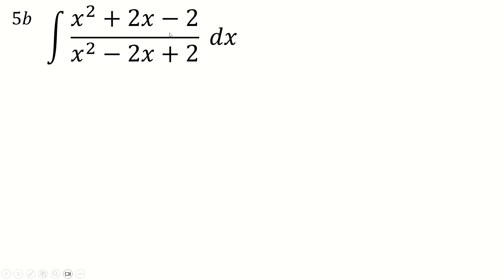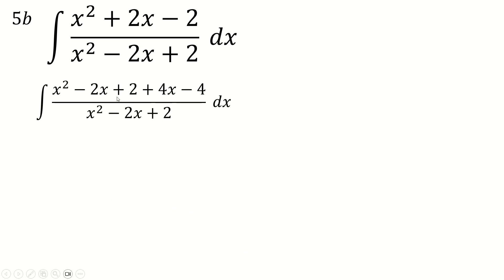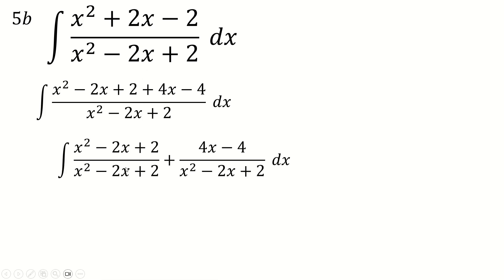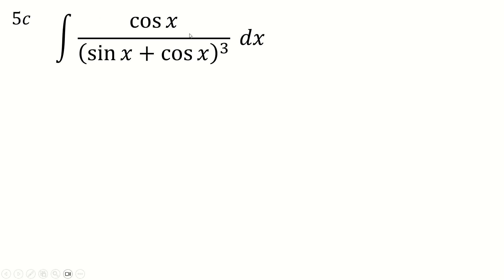Again we use the '0 equals 1 minus 1' trick to build the denominator from the numerator. Write it accordingly, split the integral in two: one part gives 1, the other gives a fraction whose numerator is half the derivative of the denominator — so that part is one half times log of the denominator. The integral of 1 is just x, and combining these gives the complete answer neatly.